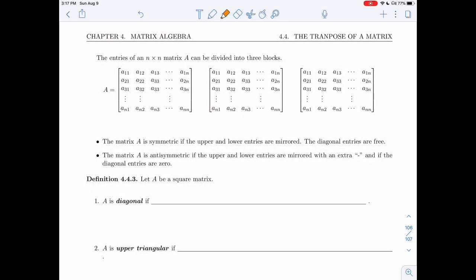All right, so to fully understand what it means for a matrix to be symmetric or anti-symmetric, I want to look at the entries of a square matrix, and I'll show you three different blocks.